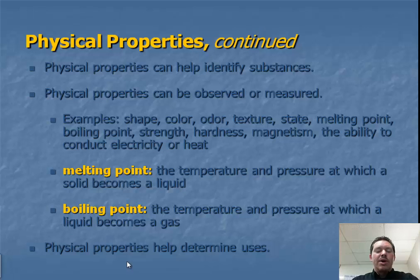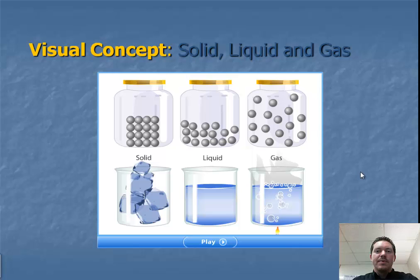We can use physical properties to help determine the uses of an object. If we were to look at solids, liquids, and gases, we've got some examples here. Here's a solid,